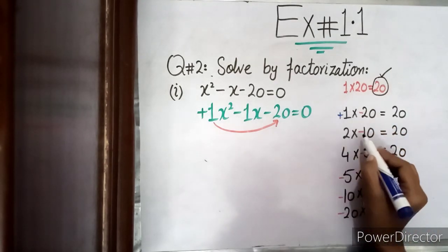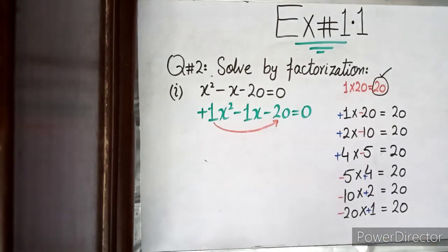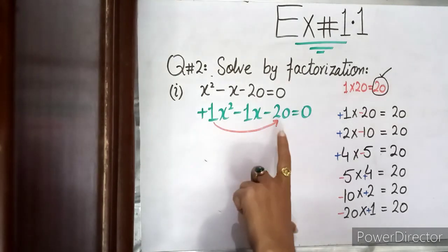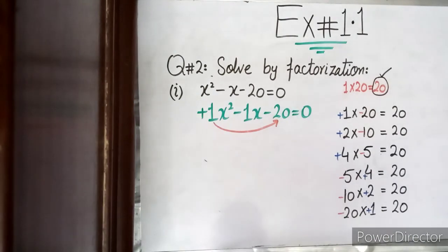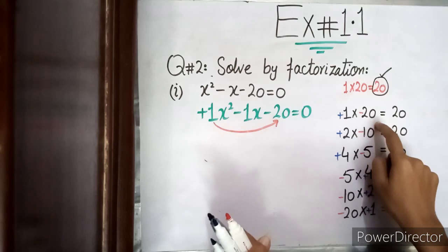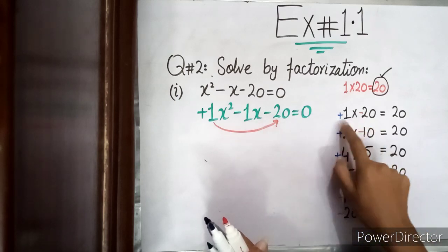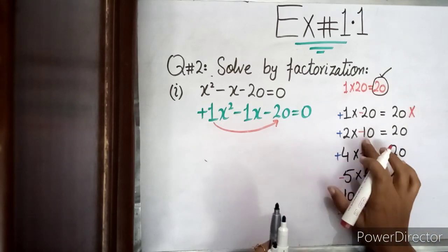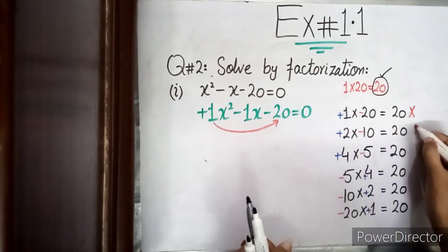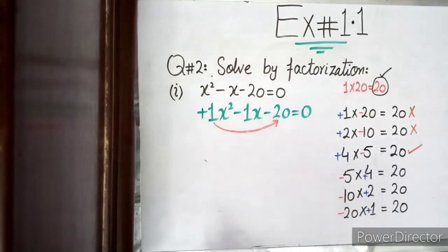Testing pairs: plus 20 minus 1 gives minus 19 — not the answer. Minus 10 plus 2 gives minus 8 — not the answer. Minus 5 plus 4 gives minus 1 — still not. So we continue checking. We need the combination that adds up to give the middle term coefficient, which is minus 1 here.